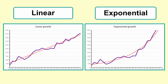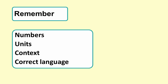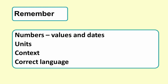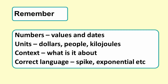So when writing about trend remember: numbers, units, context, and correct language. Give values and dates to support your statement. State your units. Make clear what the context is, and be careful about terms like spike, exponential, and increasing trend.